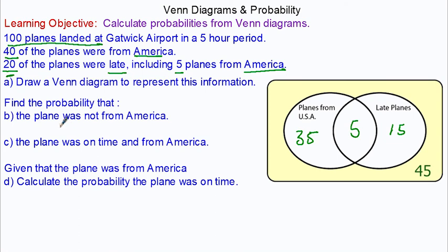Find the probability the plane was not from America. Well, 40 of the planes were, so that would be 60 which were not, and that would simplify to make three-fifths.